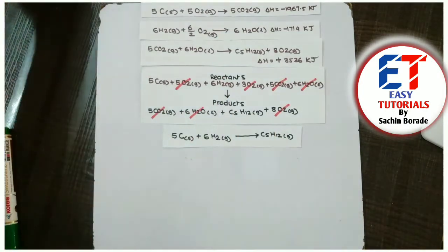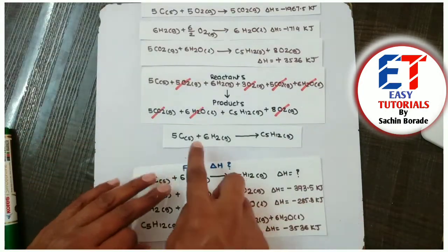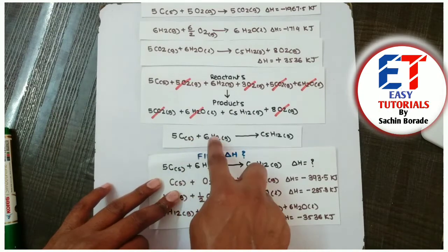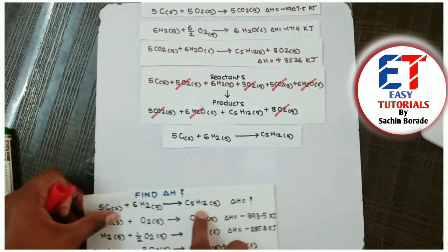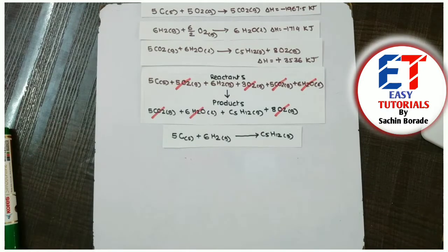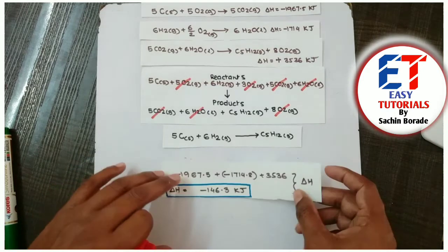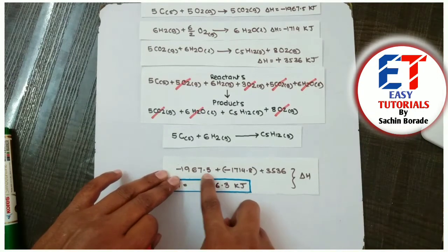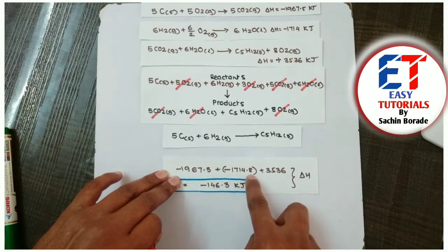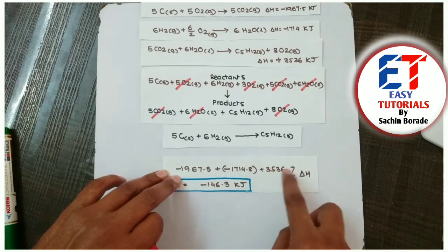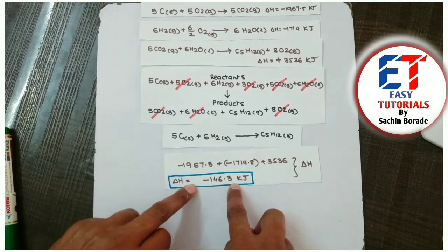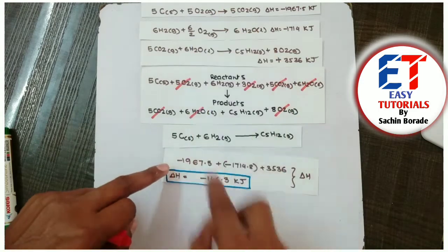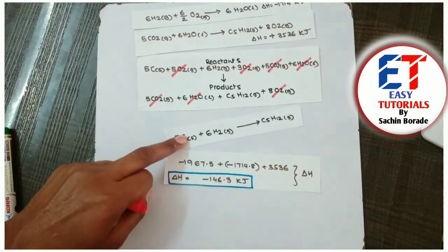So actually it is what the question we have asked: 5 carbon, 6SO2, 5C, 6SO2. So we need to do the same thing with our delta H values. Whatever we have got, minus 1967, minus 1748, plus 3536, and finally the value is minus 146.3 kilojoules, which is nothing but the enthalpy change of this reaction.